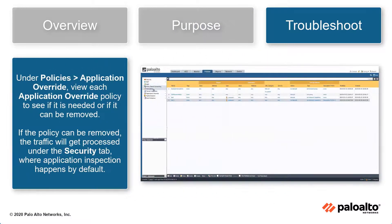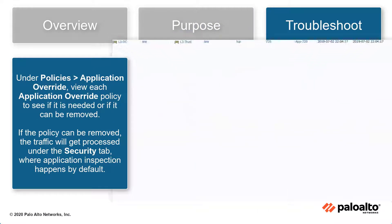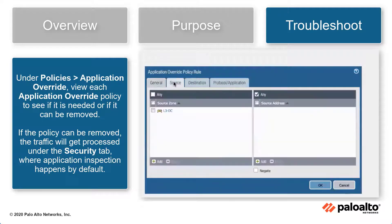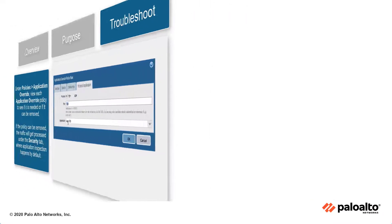Navigate to Policies > Application Override. View each application override policy to see if it is needed or if it can be removed. If removed, the traffic will get processed under the Security tab where application inspection happens by default.